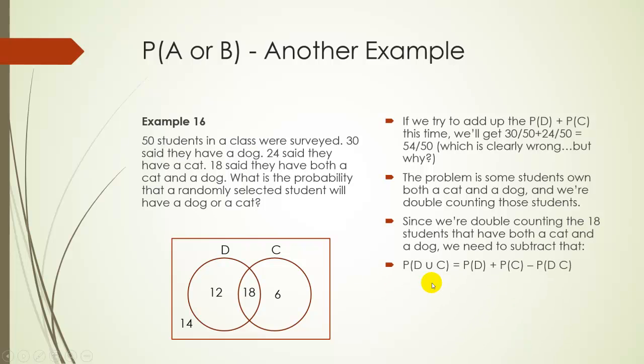So that gives us this formula. The probability of D union C in this example would be the probability of D plus probability of C minus the probability of D and C. And I left off the intersection symbol, but that should be D and C.